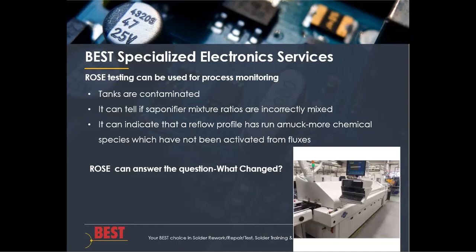Even though ROSE testing will be an obsolete process with respect to a no-go gauge on cleanliness, ROSE testing can still be used for process monitoring — we don't have to throw our ROSE testers away. We can tell if the tanks are contaminated, for example. We're measuring the entirety of the assembly for the process environment. I can tell if a saponifier mixture ratio has been altered and we're not cleaning as readily as we once had been. The equivalency rating would go up, and boards would seem to be dirtier with respect to ROSE testing, but it would at least tell you if the saponifier mixture ratio has not been mixed properly or has changed.